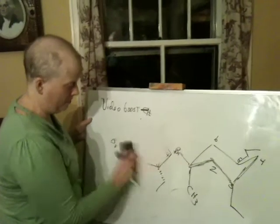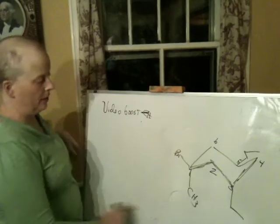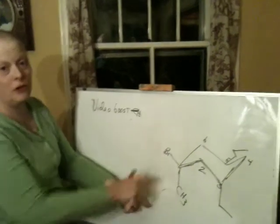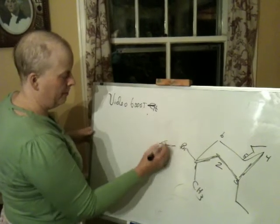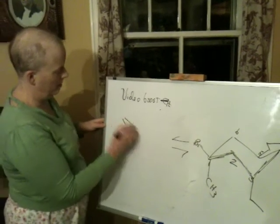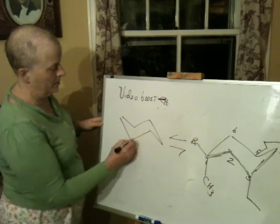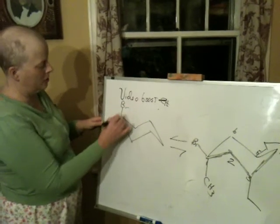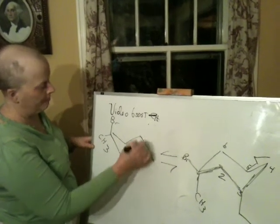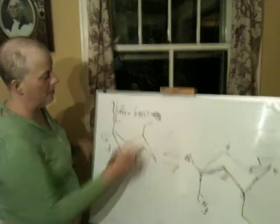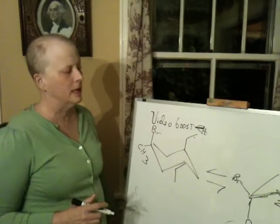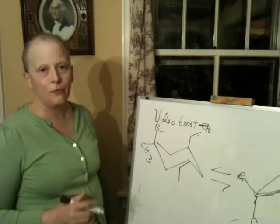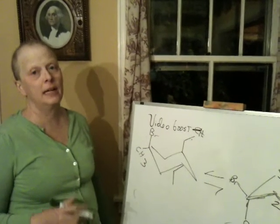Once you get the proper stereoisomer drawn — think about it: if you switch those two groups you would have a diastereomer, that would invert the center. But I would flip this chair. When you flip the chair, the bromine is going to go axial, the methyl is going to go equatorial, the ethyl group is going to become equatorial, and then this group is going to become axial.